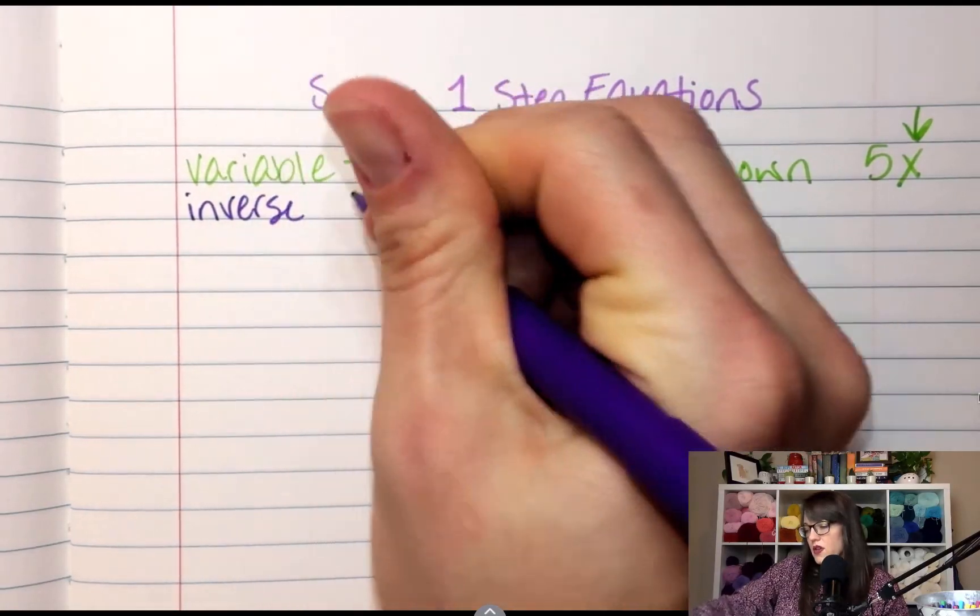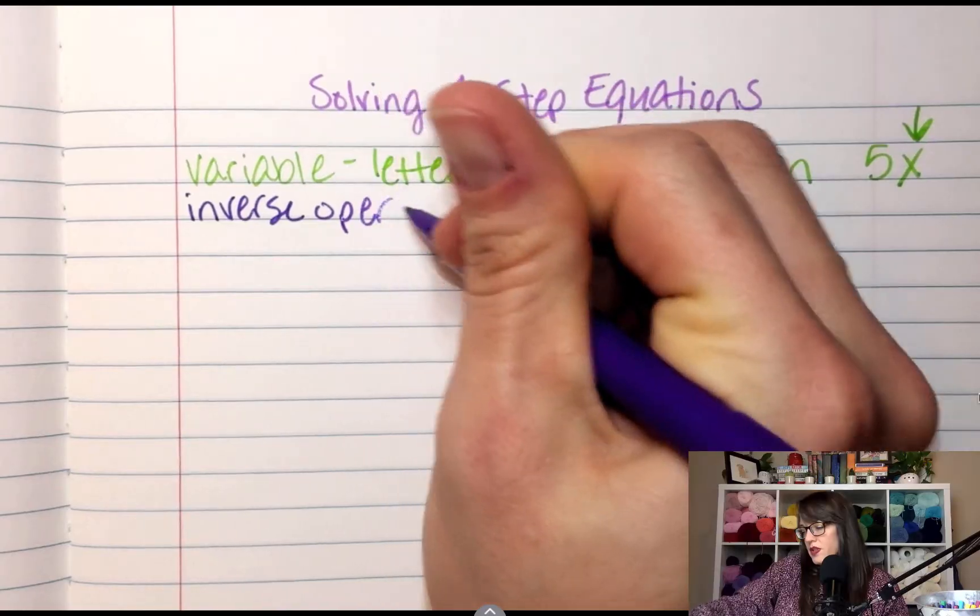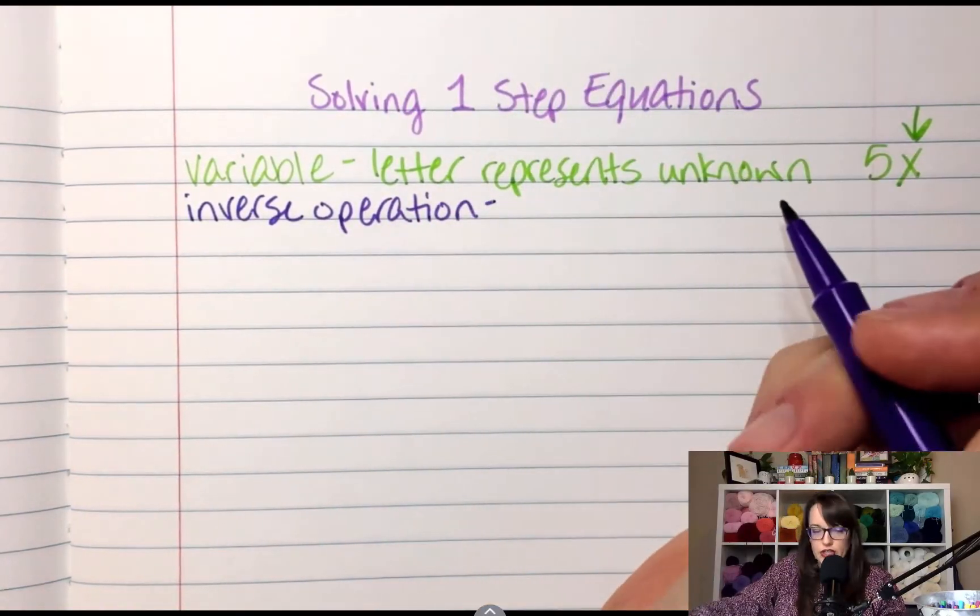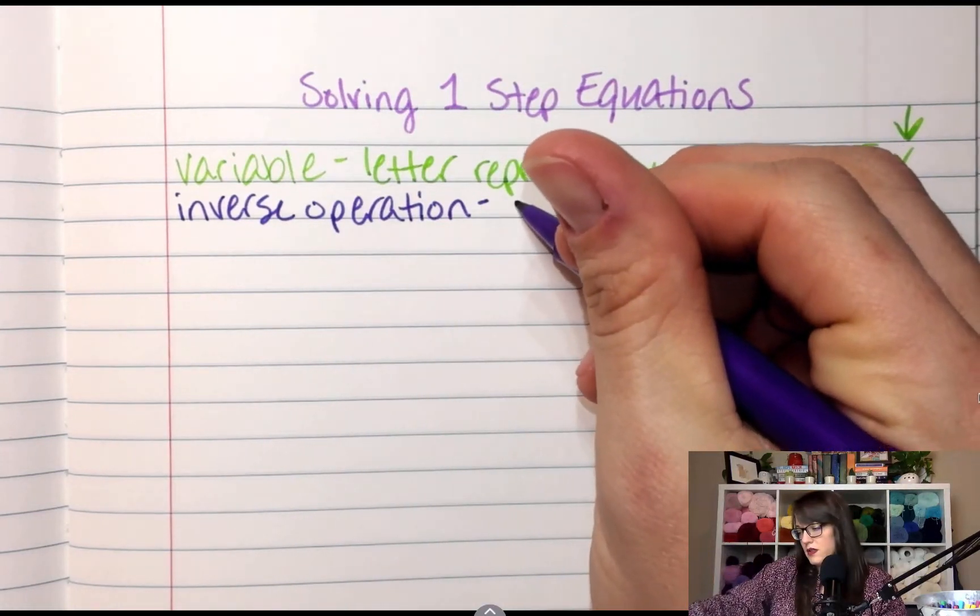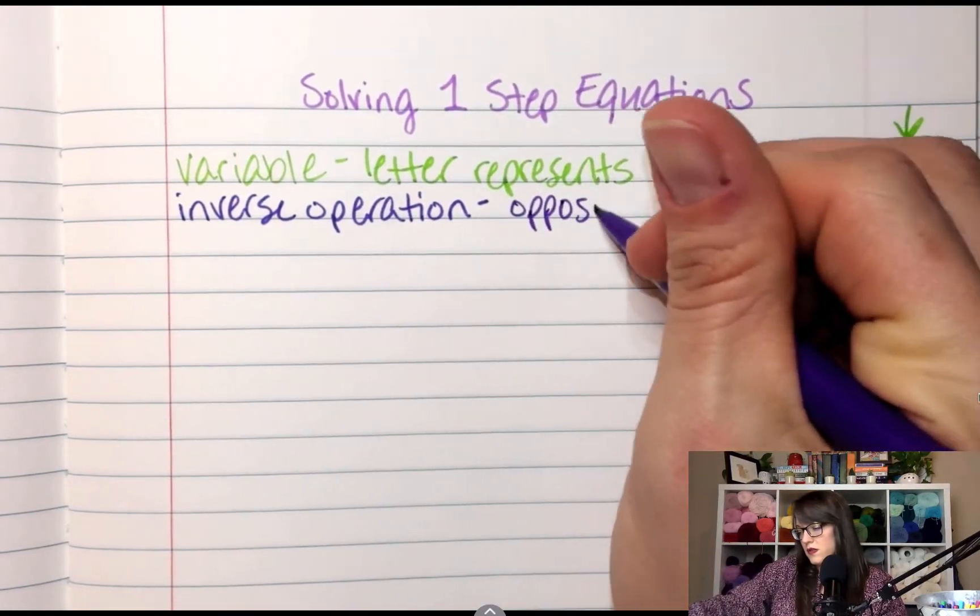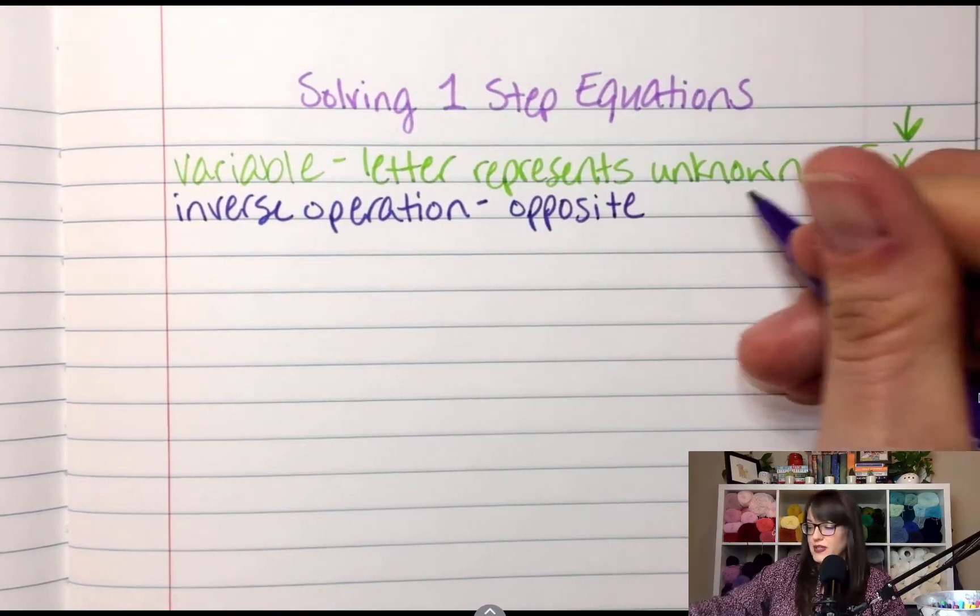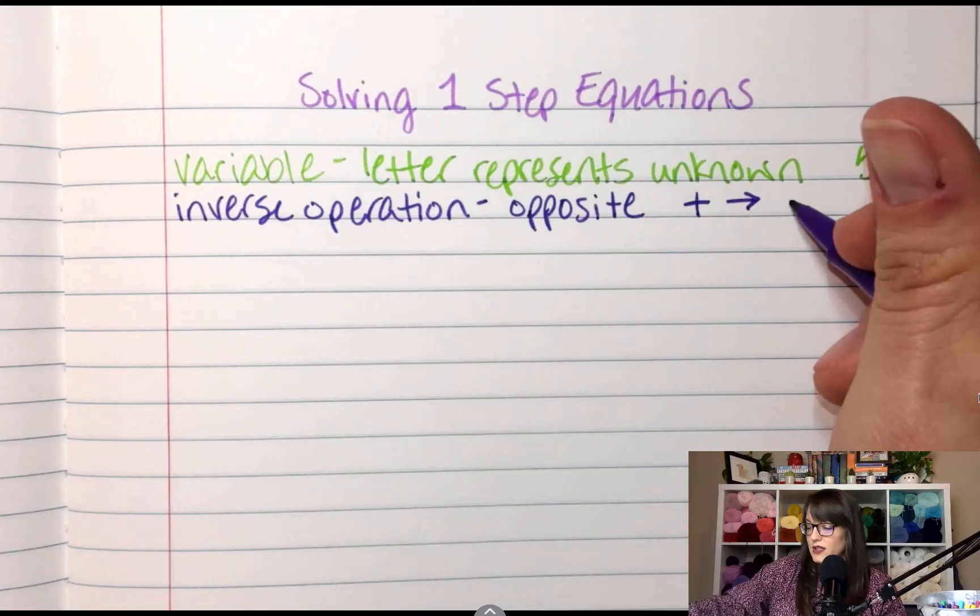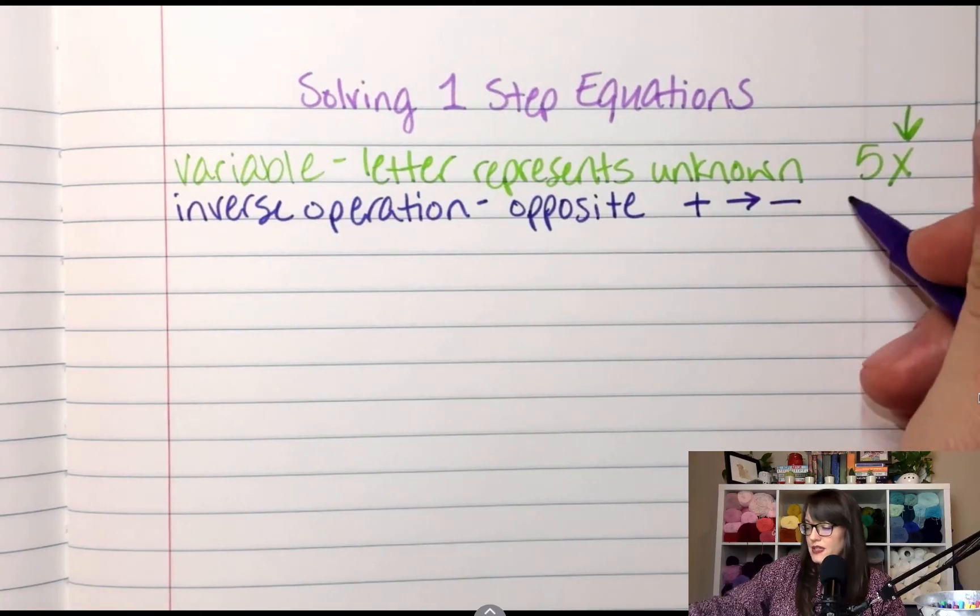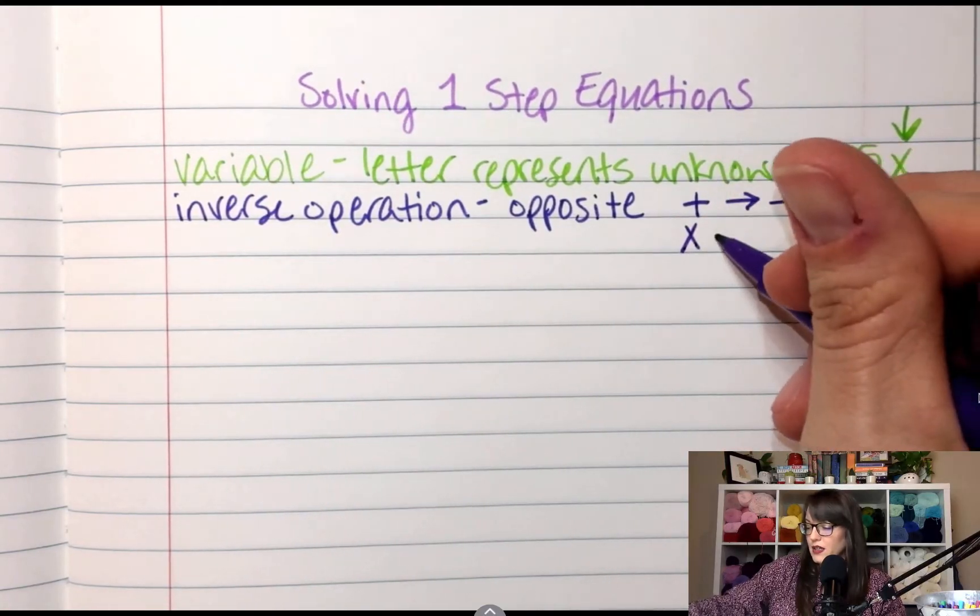So the opposite of adding is to subtract, the opposite of multiply is to divide, and vice versa.